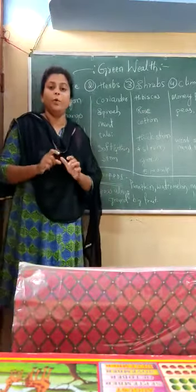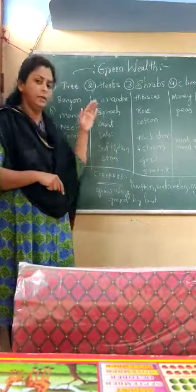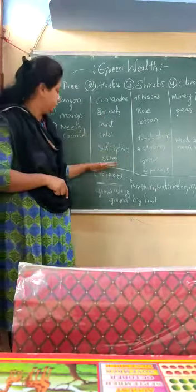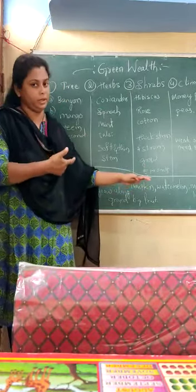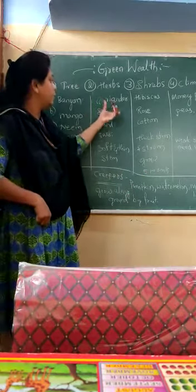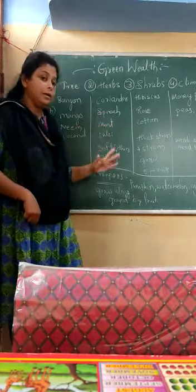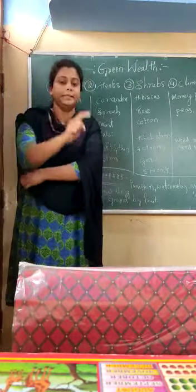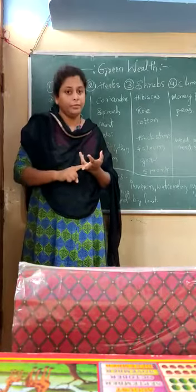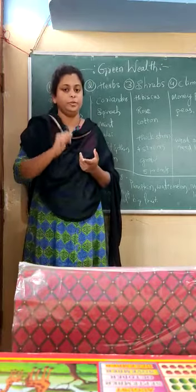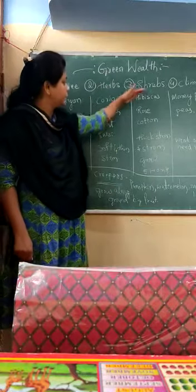In this video we will start from shrubs. You all remember what herbs are — herbs are plants which have a soft and thin stem and can grow up to medium height, like two to three meters. Examples are coriander, spinach, mint, and tulsi. These are mainly used for medicinal purposes, like in syrups, medicine tablets, perfumes, and bathing soaps.